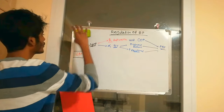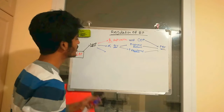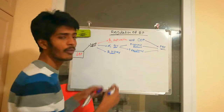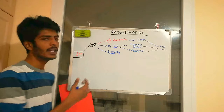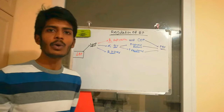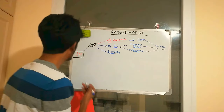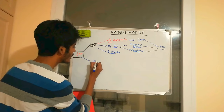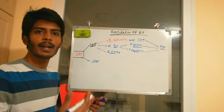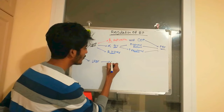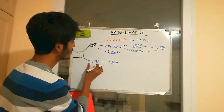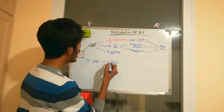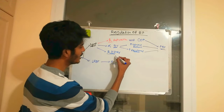Beta-1 adrenoreceptors are also located in the kidney. Decreased blood pressure leads to decreased blood flow to organs, including the kidneys — reduced renal blood flow. This stimulates the formation of renin from the juxtaglomerular apparatus. Stimulation of beta-1 receptors in the kidney also leads to increased production of renin.